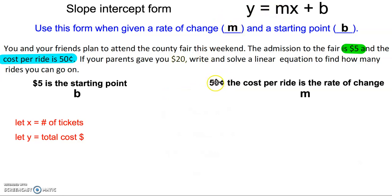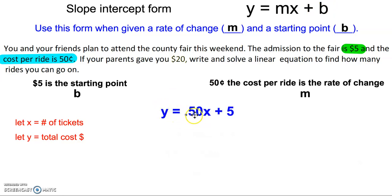Here the slope is going to be the 50 cents. X represents the number of rides or the number of tickets, and b is the starting point. So we write our equation: y equals 50 cents times the number of tickets plus the $5 it takes to get in, and that's going to equal the total cost, which is y.